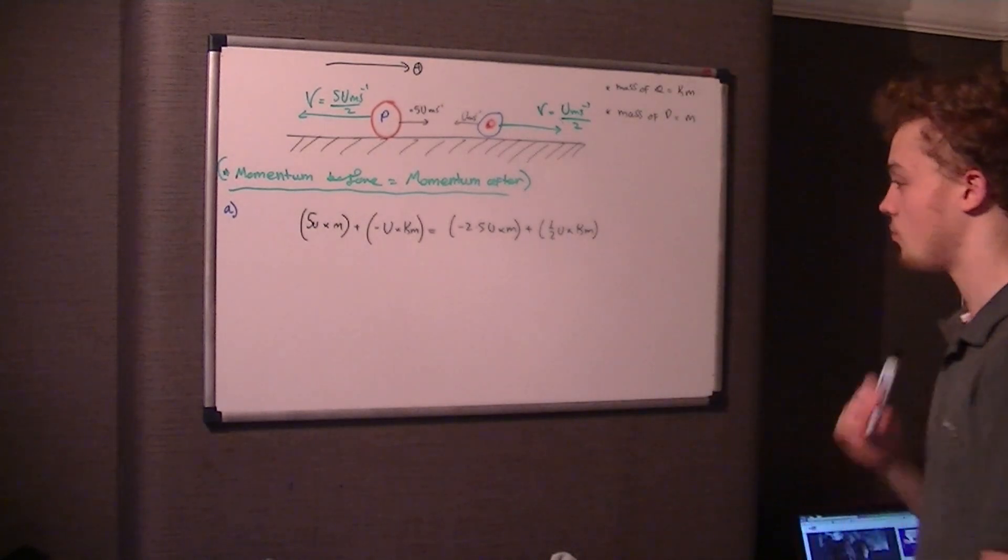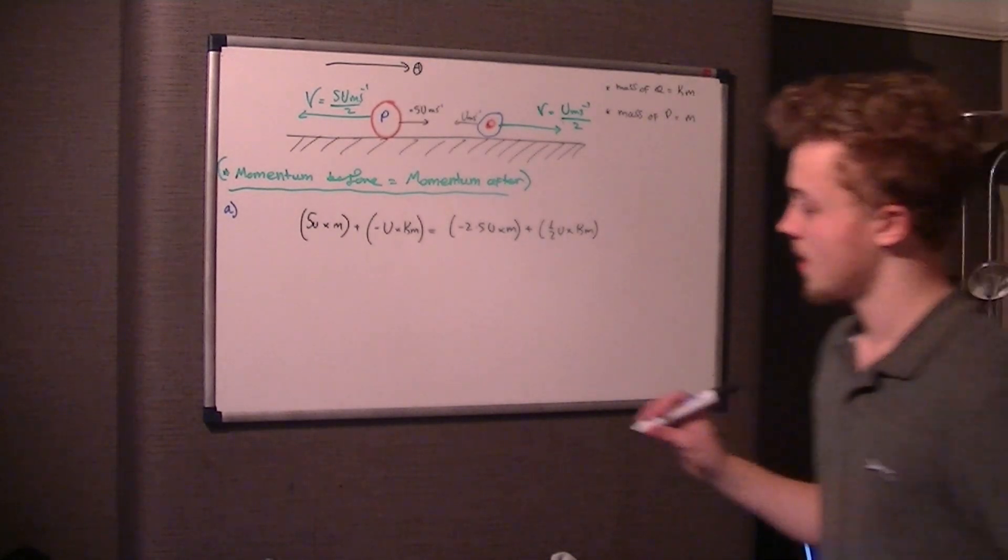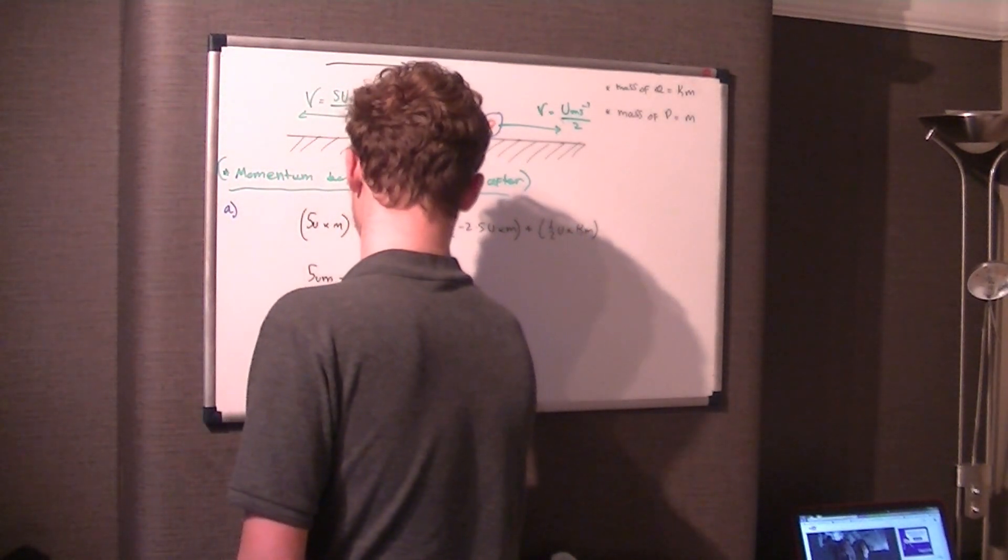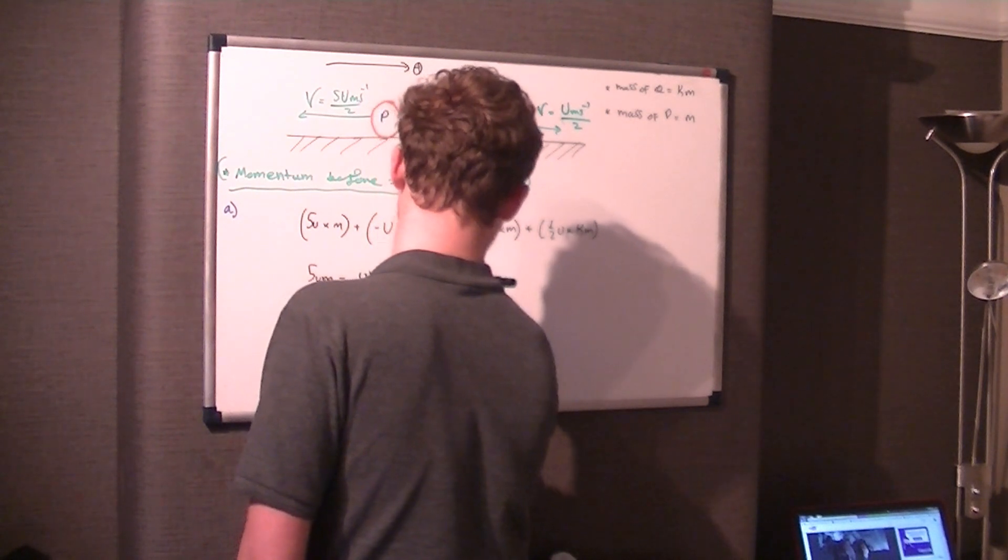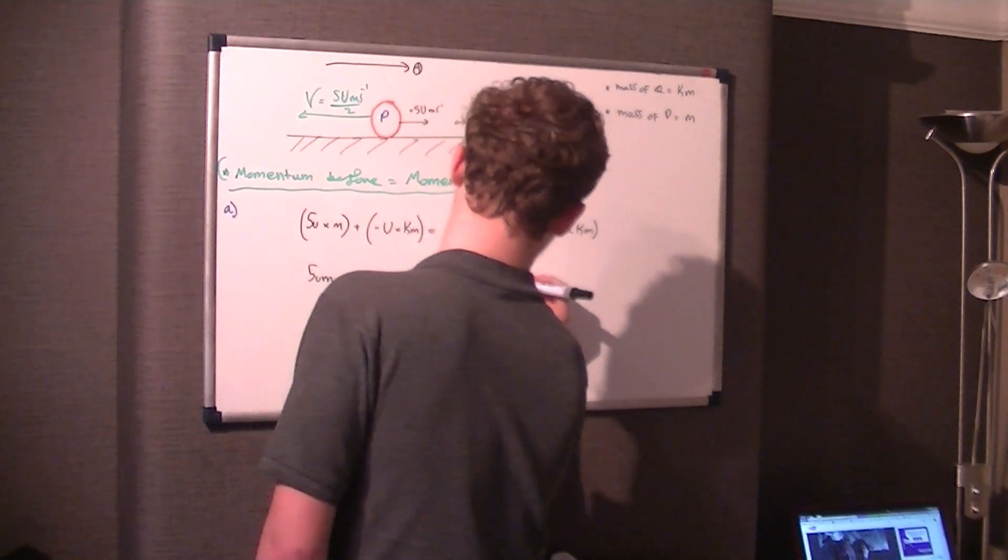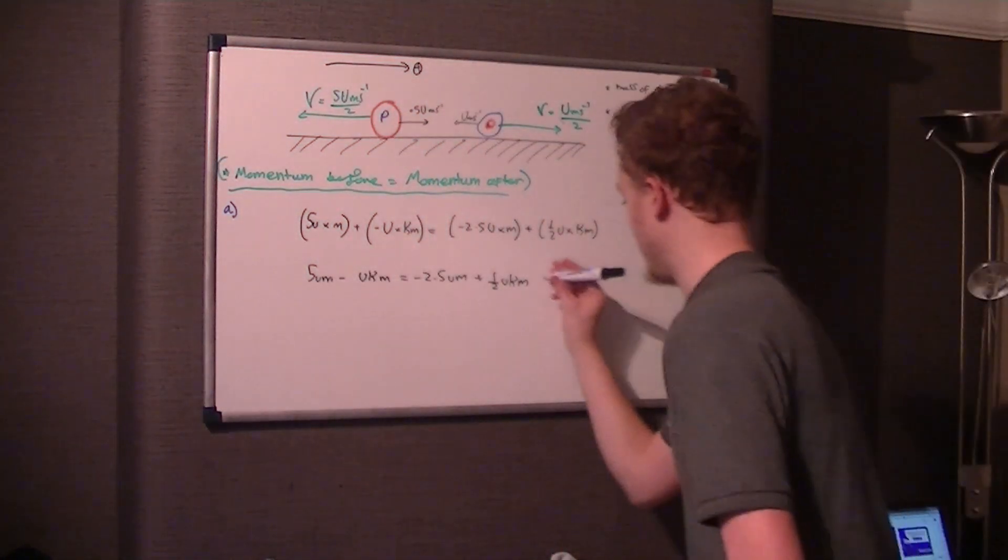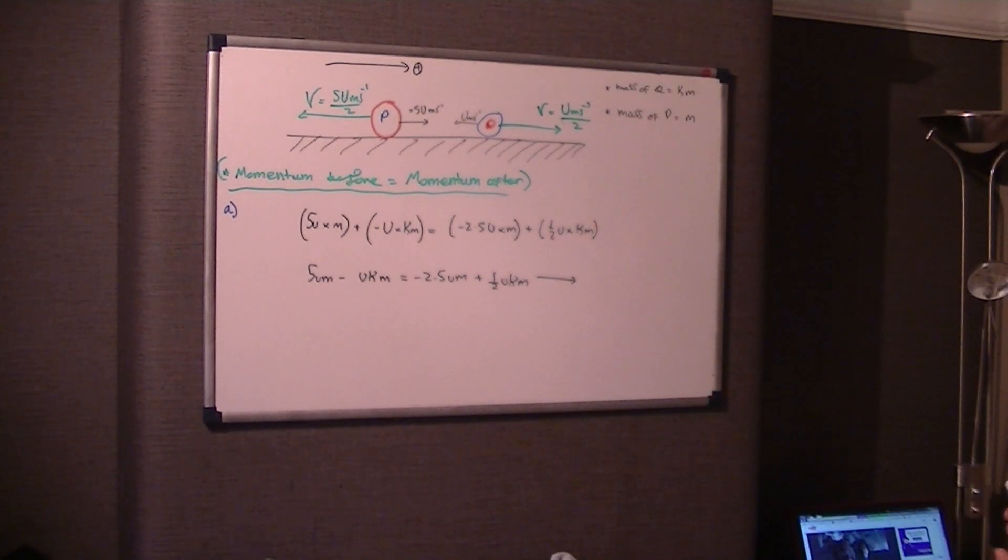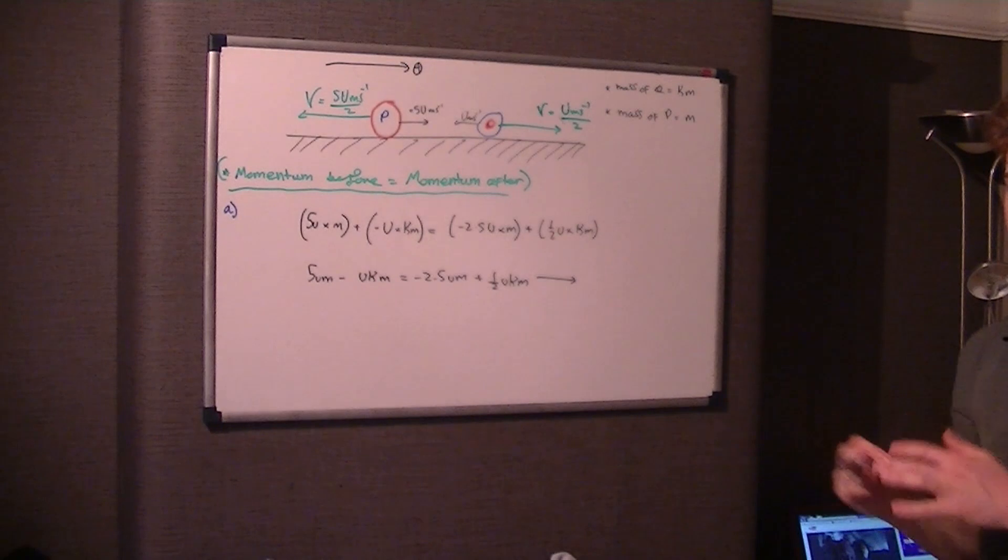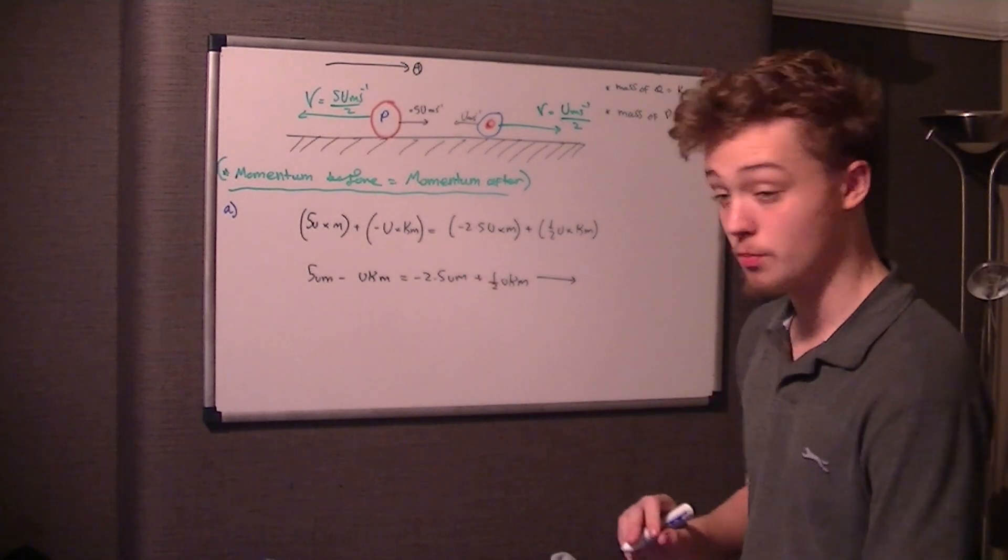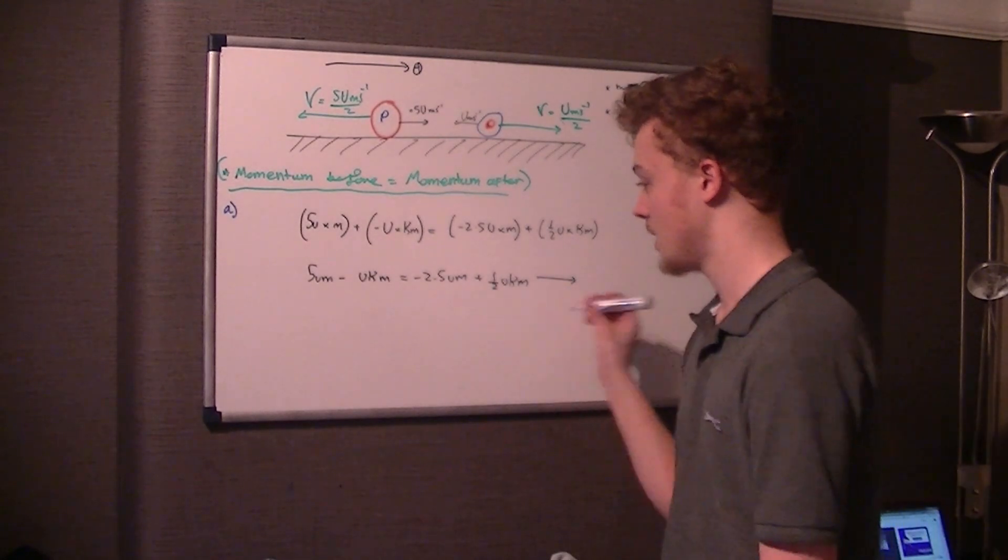So what we're going to do is simply rewrite this equation. 5UM take UKM equals negative 2.5UM plus half UKM. So the next thing we're going to do is collect like terms, that's me trying to sound intelligent by saying put the same terms on each side. So get all the UMs on one side and all the KMs on another, so then we can try and cancel something down.